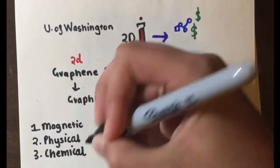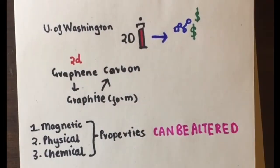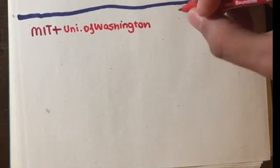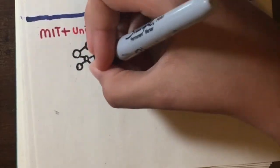When a substance is made 2D, its magnetic, physical and chemical properties can be altered. However, this substance can retain its magnetism even when it's two-dimensional.